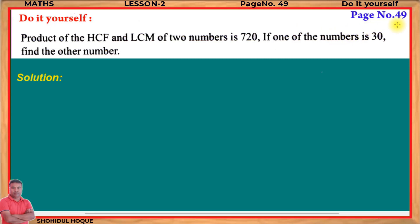On page number 49, Do It Yourself, question 2 says: the product of the HCF and LCM of two numbers is 720. If one of the numbers is 30, find the other number.